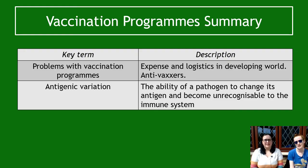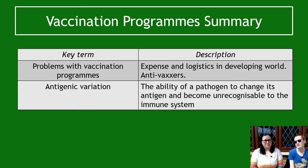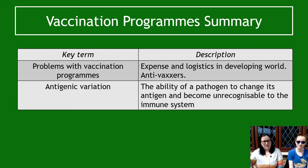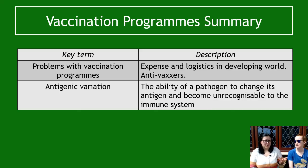To summarize, that's all you need to know about vaccines across these two videos. Things to know from this one: first, problems with vaccination programs — expense means high-poverty areas might not get vaccines, and anti-vaxxers refusing vaccination is a significant issue. Second, antigenic variation — the ability of a pathogen to change its antigens on the outside of its membrane and become unrecognizable to the immune system, which is why we potentially need new vaccines every year, every five years, or every ten years.